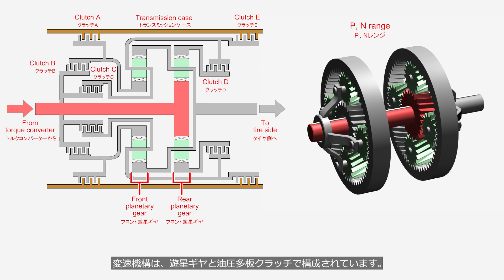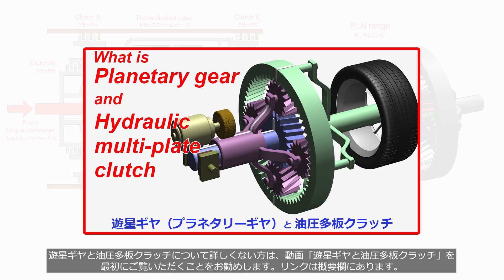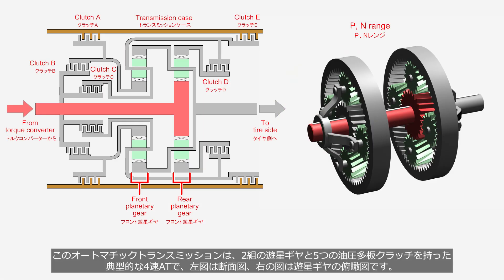The shifting mechanism consists of planetary gears and hydraulic multi-plate clutches. If you are not familiar with planetary gears and hydraulic multi-plate clutches, please watch the video 'What is Planetary Gear and Hydraulic Multi-plate Clutch?' before watching this video — the link is provided in the description. This automatic transmission is a typical 4-speed AT, with two sets of planetary gears and five hydraulic multi-plate clutches. The left figure is a cross-sectional view and the right figure is a 3D view of the planetary gears.